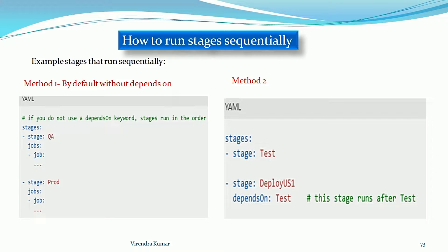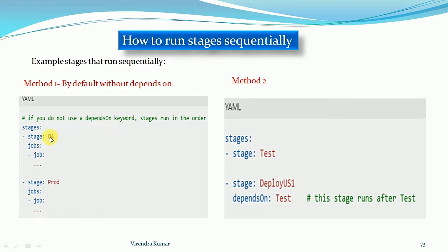On my screen you can see Method 1 - the example showing that if you don't use the dependsOn keyword, stages will run in the order in which you define them. You can see we have a QA stage and a production stage. In that example we don't use the dependsOn keyword, so the stages will run sequentially - the QA stage will execute first, and once it's completed the production stage will start executing.